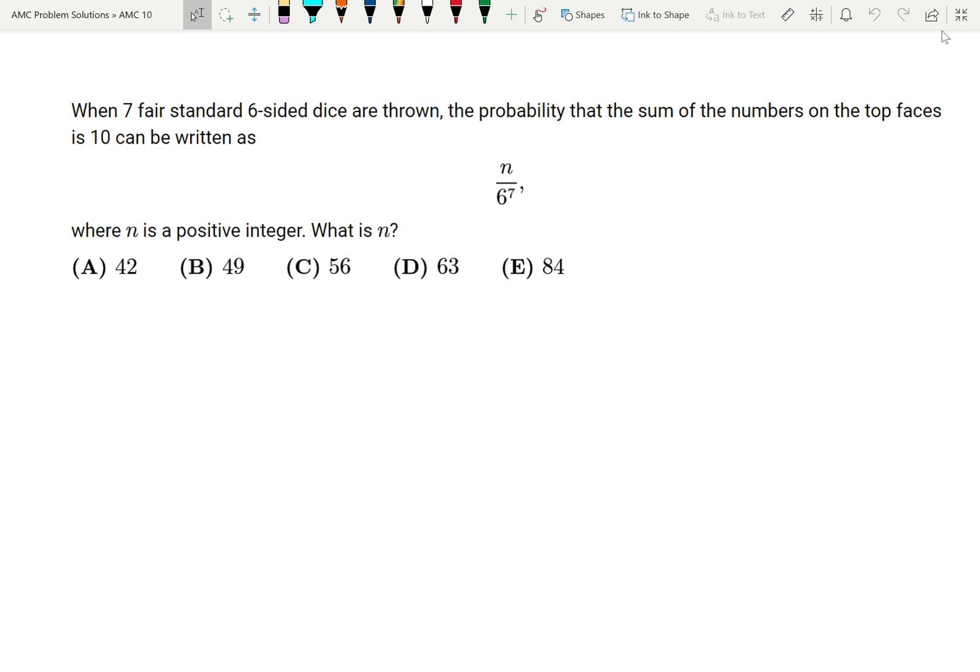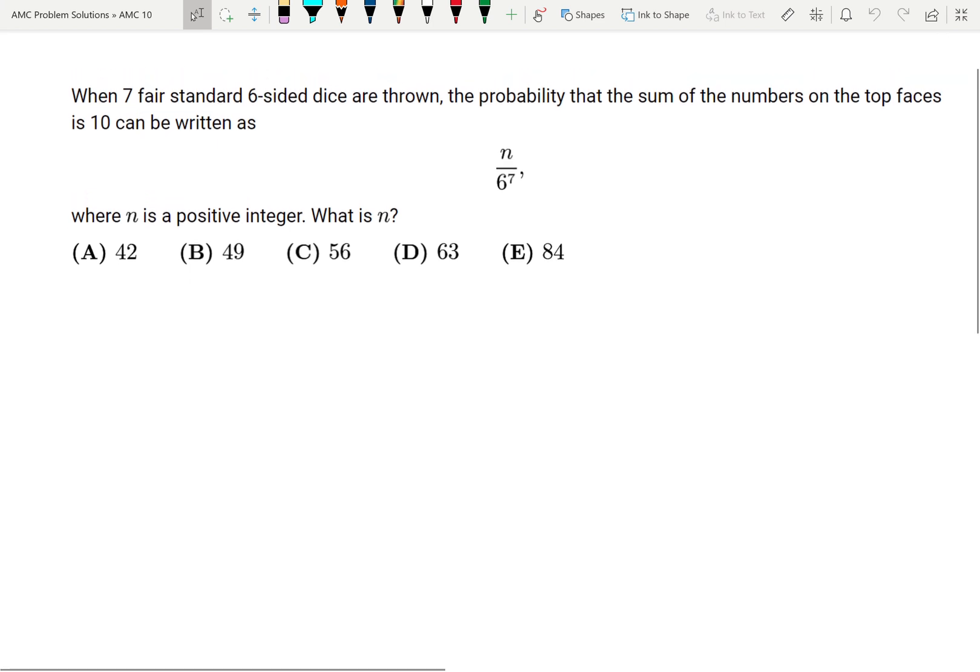When seven fair standard six-sided dice are thrown, the probability that the sum of the number on the top faces is 10 can be written as n over 6 to the 7th, where n is a positive integer. What is n?